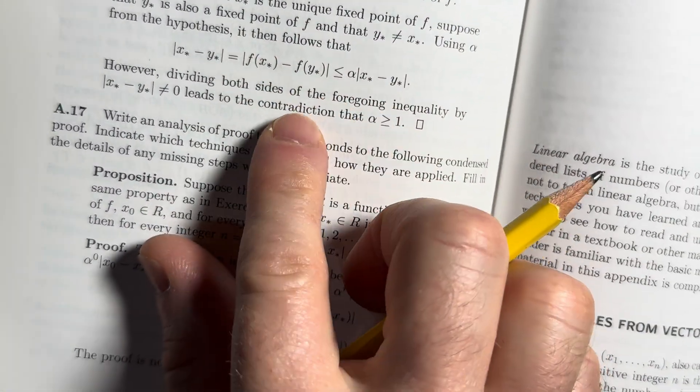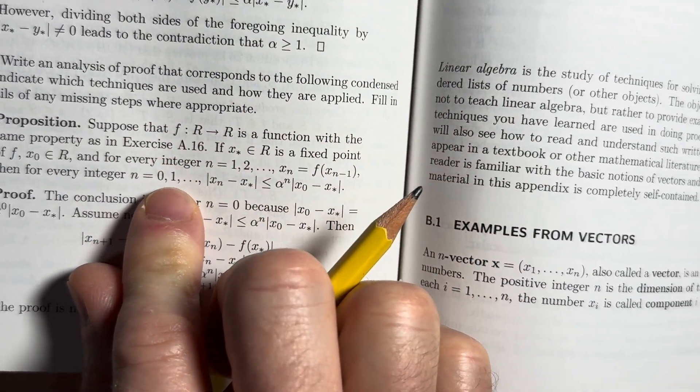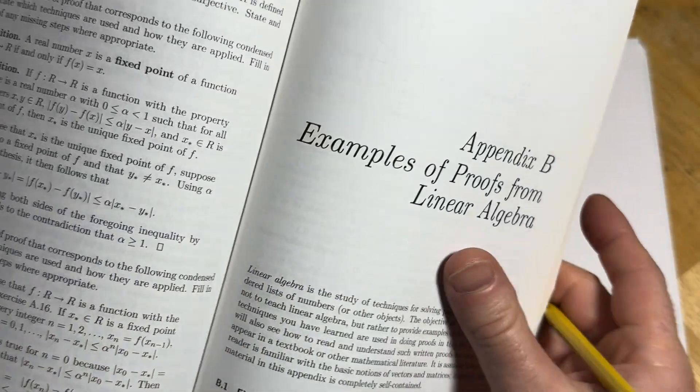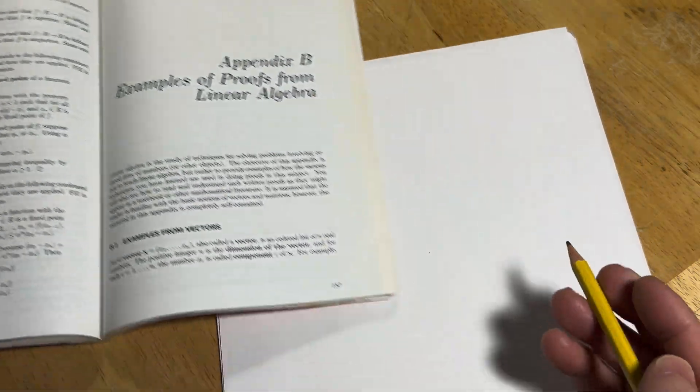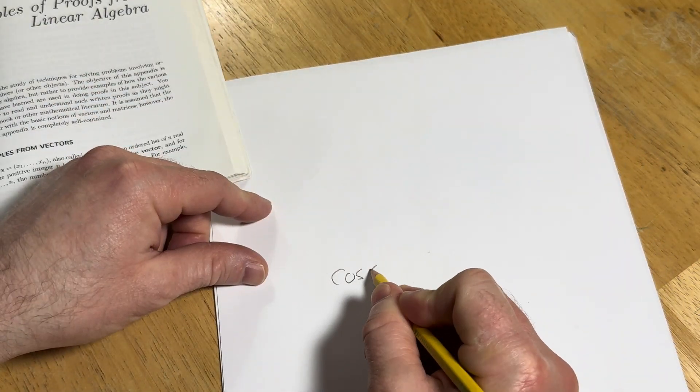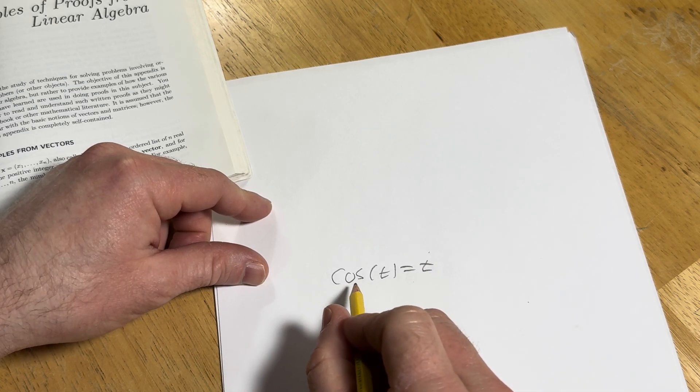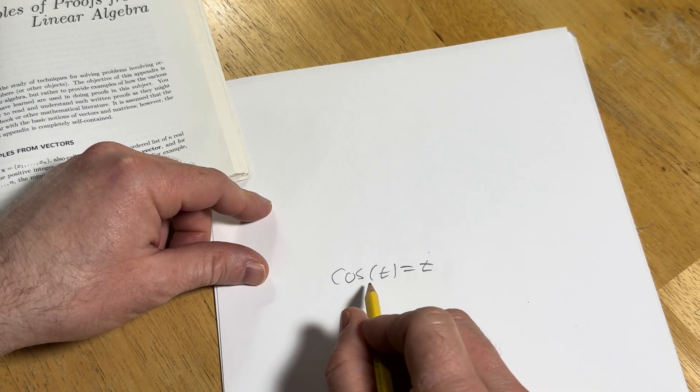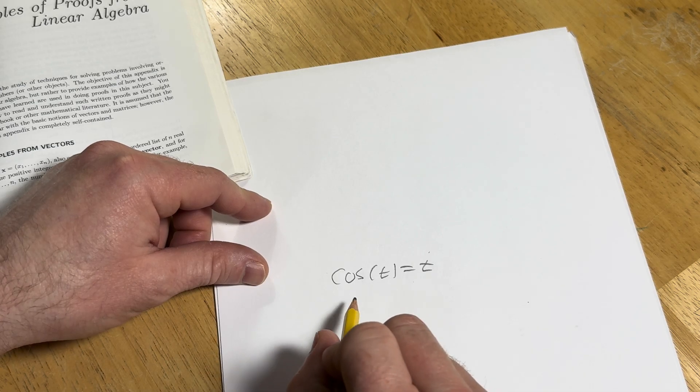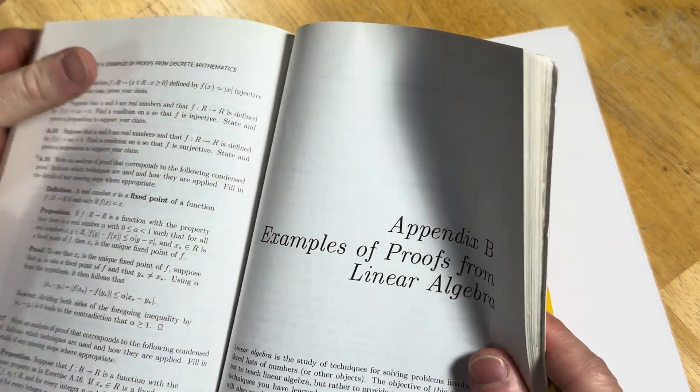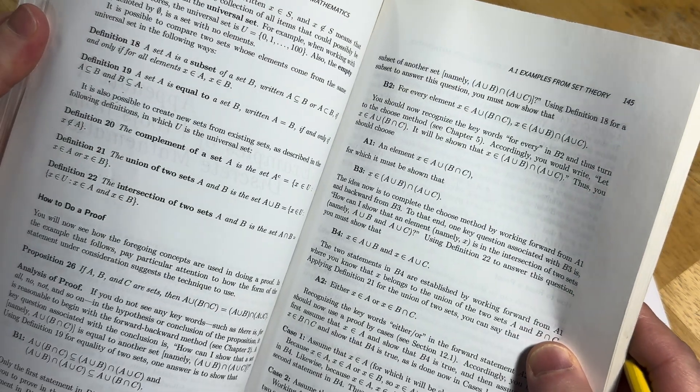And then here's the proof. Nice, right? So, we saw that earlier with cosine. We saw that cosine of t is equal to t. So, this is a fixed point. So, t is a fixed point of cosine, right? We saw that earlier in the video.